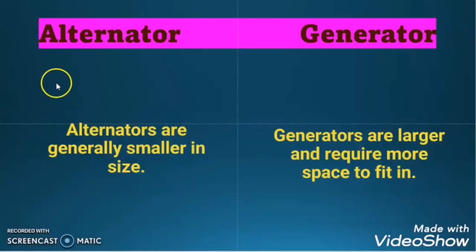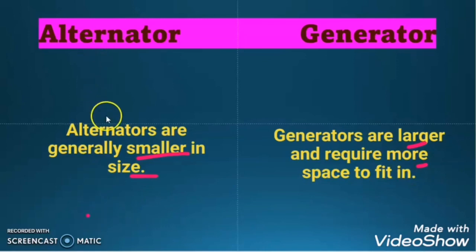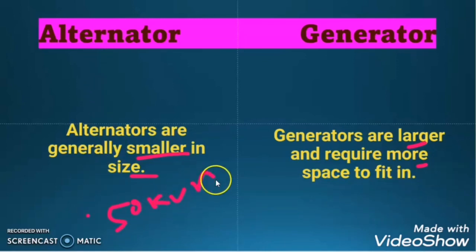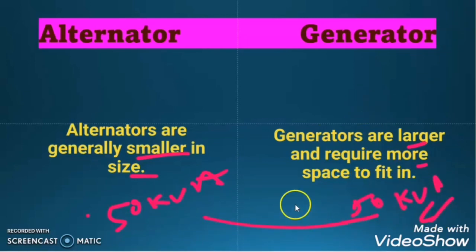Another difference between the alternator and generator is that the alternator is of a smaller size, but the generator is of a larger size. Suppose I have an alternator of 50 kVA and a generator also of 50 kVA — the generator size will be comparatively bigger than the alternator for the same rating.